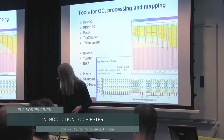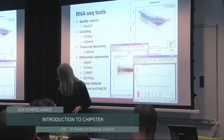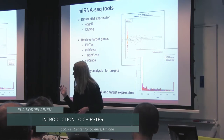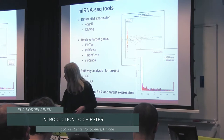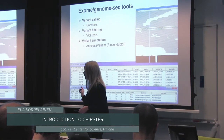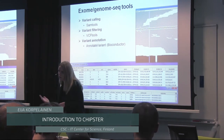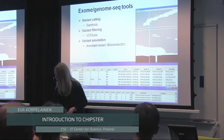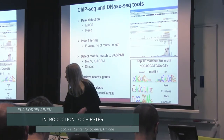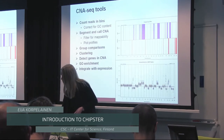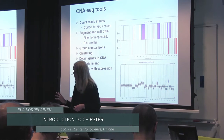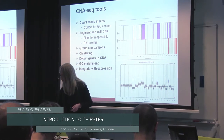The usual suspects for quality control and mapping are there. For RNA-seq we have differential expression and pathway analysis. For microRNA, similar things but also retrieving target genes and doing pathways for those. The exome and genome variant calling section is very small — we haven't put much effort into that, and we are actually not allowed to put GATK into Chipster because we are distributing it, which is a bit of an issue. For ChIP-seq we have motif finding and pathway analysis. The copy number analysis is fairly comprehensive — this was done in collaboration with the Amsterdam Cancer Center, where people are very specialized in this.